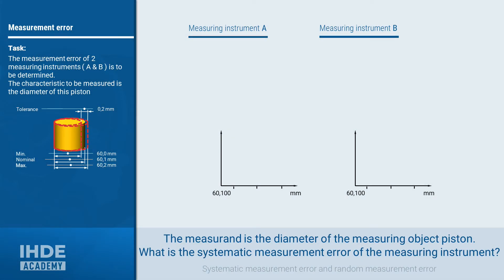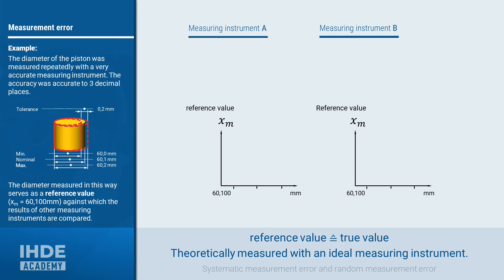To explain the systematic and random measurement error, we consider the measurement results of two measuring instruments: measuring instrument A and measuring instrument B. The measurement error is to be determined for both. The test characteristic is the diameter of a piston, with a nominal diameter of 60.1 mm. To determine a measurement error, the measured dimension must be compared with the reference value, obtained by measuring with a much more precise instrument — accurate to a thousandth of a millimeter — whereas measuring instruments A and B measure to an accuracy of two hundredths.